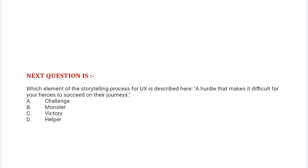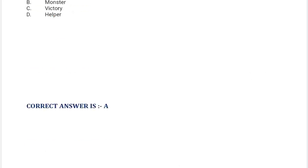Next question is: which element of the storytelling process for UX is described here? A hurdle that makes it difficult for your heroes to succeed on their journeys. Option A: challenge. Option B: monster. Option C: victory. Option D: helper. Correct answer is Option A.